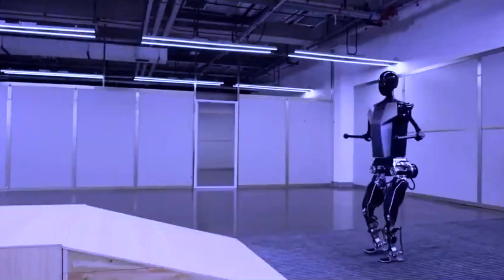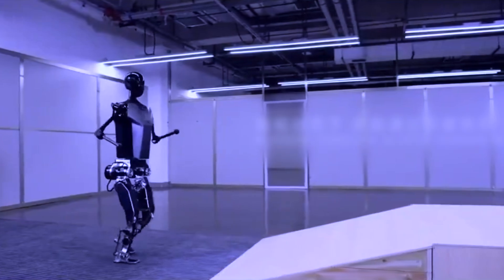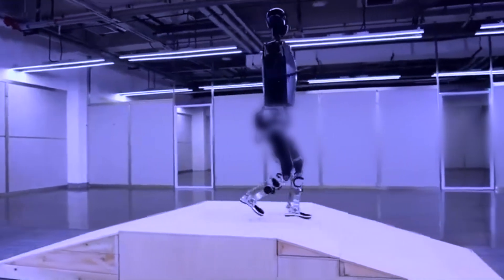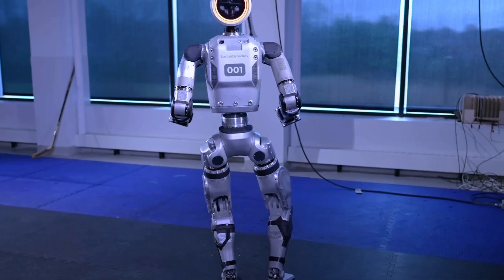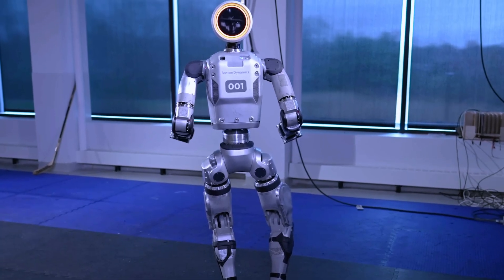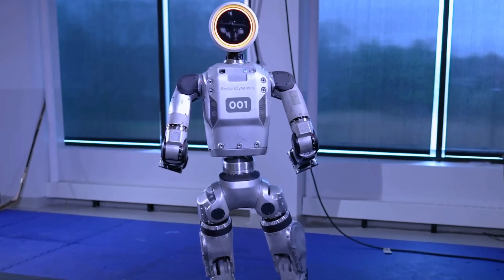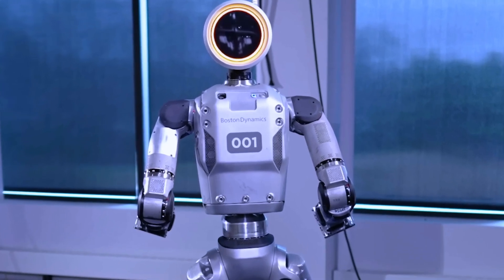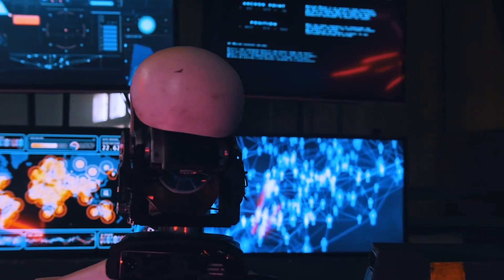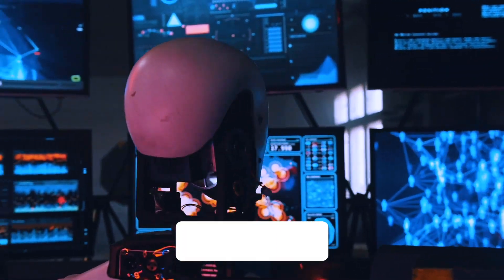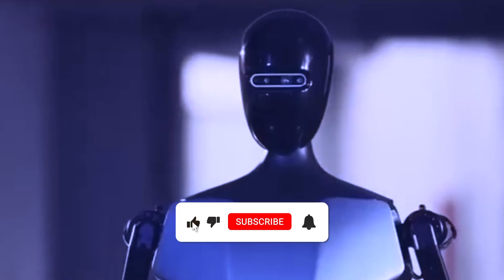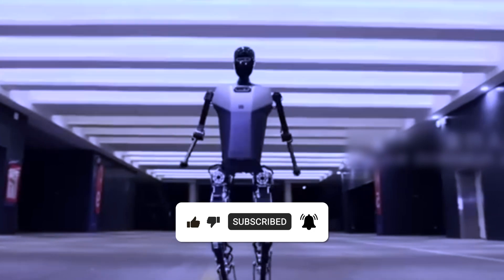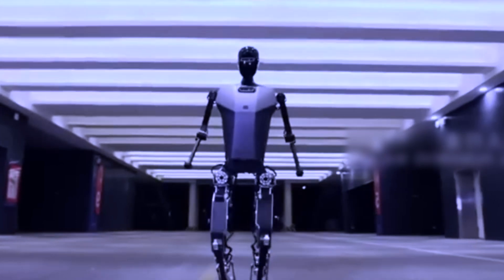The unveiling of Tiangong, China's groundbreaking humanoid robot, marks a significant milestone in the global race for technological supremacy. As these sophisticated machines continue to push the boundaries of what is possible, we are faced with both the excitement and the challenges that come with their integration into our lives. By fostering responsible innovation, embracing the potential of humanoid robotics, and carefully considering the societal implications, we can shape a future where these machines become our trusted partners in shaping a better world.